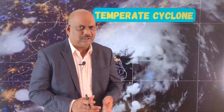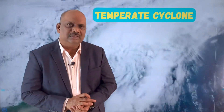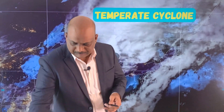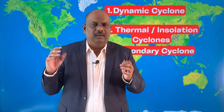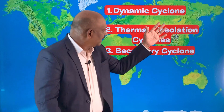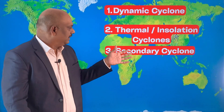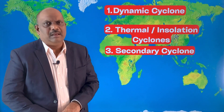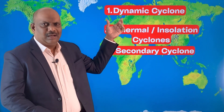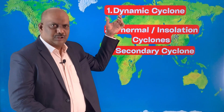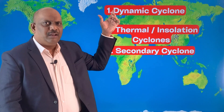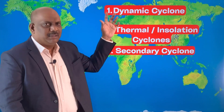Temperate cyclones are also called extra-tropical or wave cyclones. There are three types: dynamic cyclones, thermal or insolation cyclones, and secondary cyclones. It is the dynamic cyclone which is most important and exactly refers to the temperate cyclone, and we will be discussing this dynamic cyclone in length.